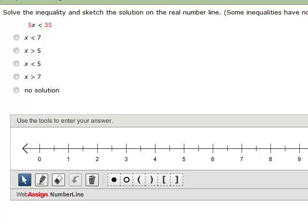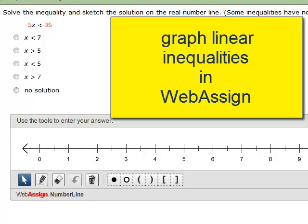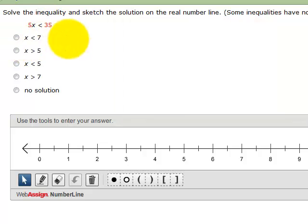Hi guys, I'm going to help you graph inequalities in WebAssign. This first one, you should be able to quickly work it out. Divide both sides by 5. You do not need to flip the inequality sign because I'm not multiplying or dividing by a negative. So your answer is simply x is less than 7.